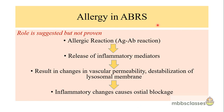The role of allergy in acute bacterial rhinosinusitis is suggested but not proven. An allergic reaction triggers an antigen-antibody reaction, leading to the release of inflammatory mediators. These mediators cause changes in vascular permeability and destabilization of the lysosomal membrane, resulting in inflammatory changes that ultimately cause ostial blockage, which predisposes to the development of acute bacterial rhinosinusitis.